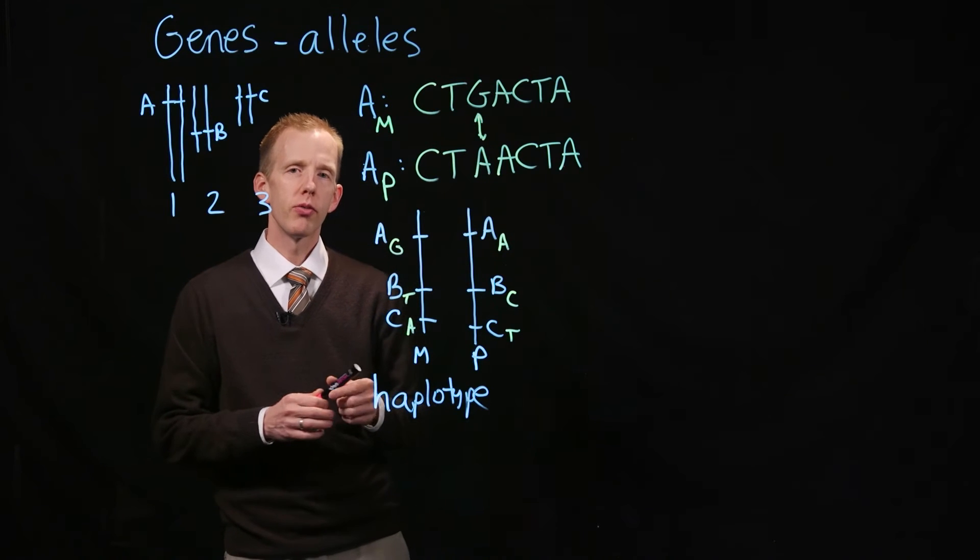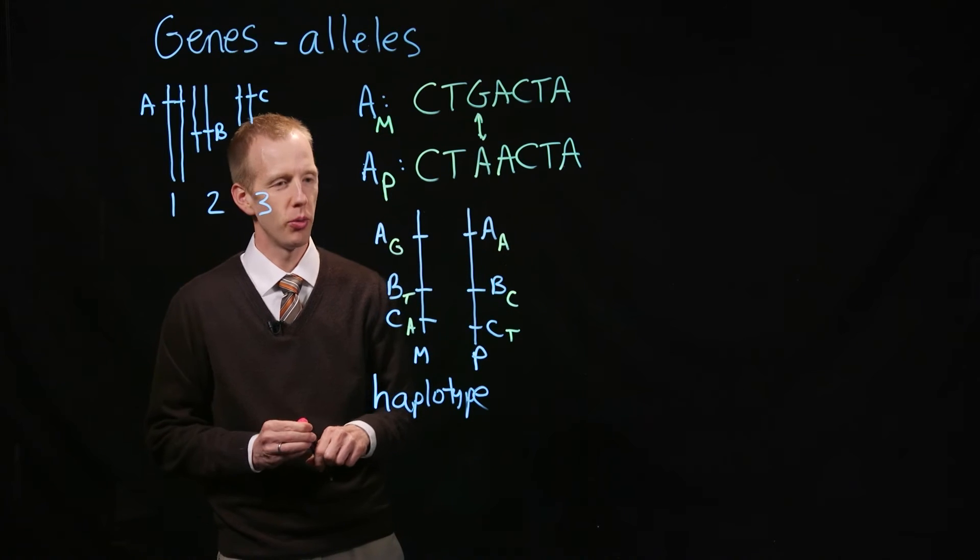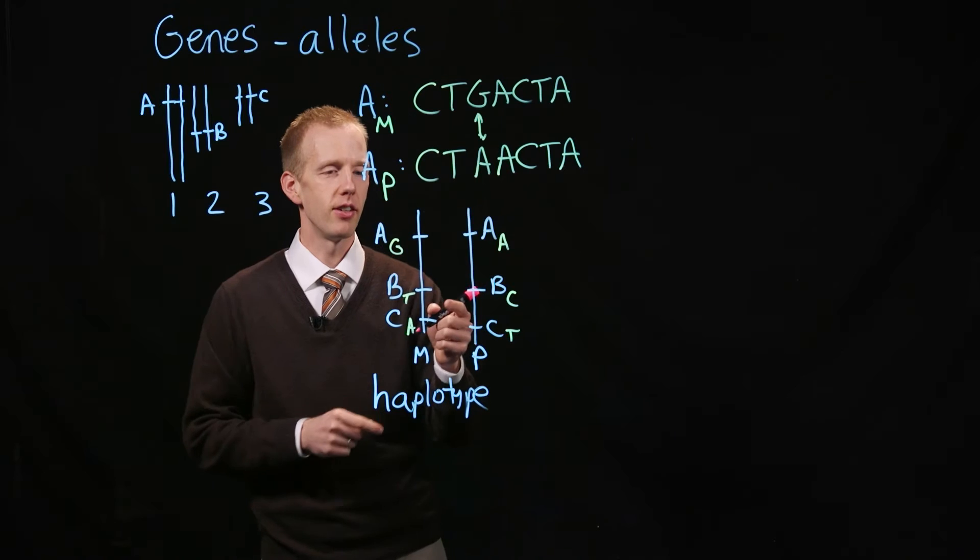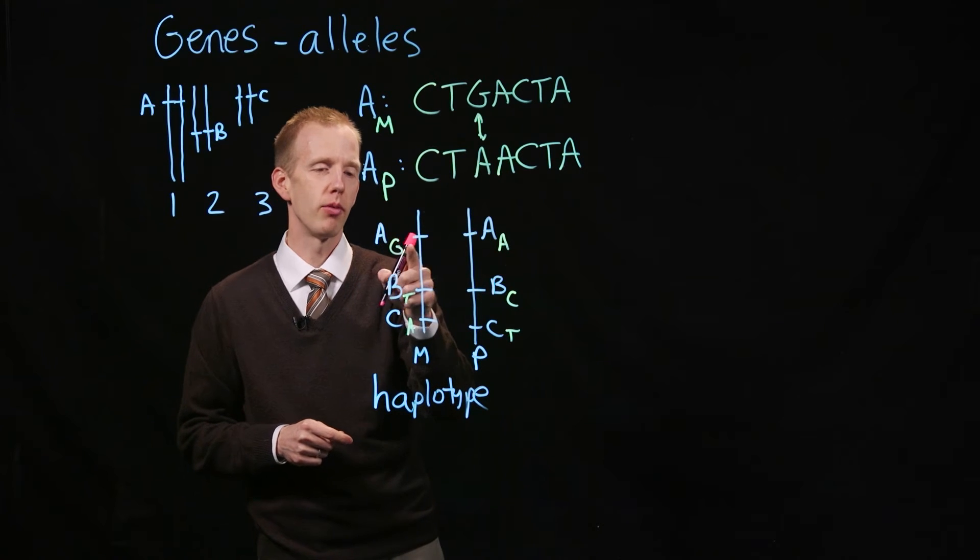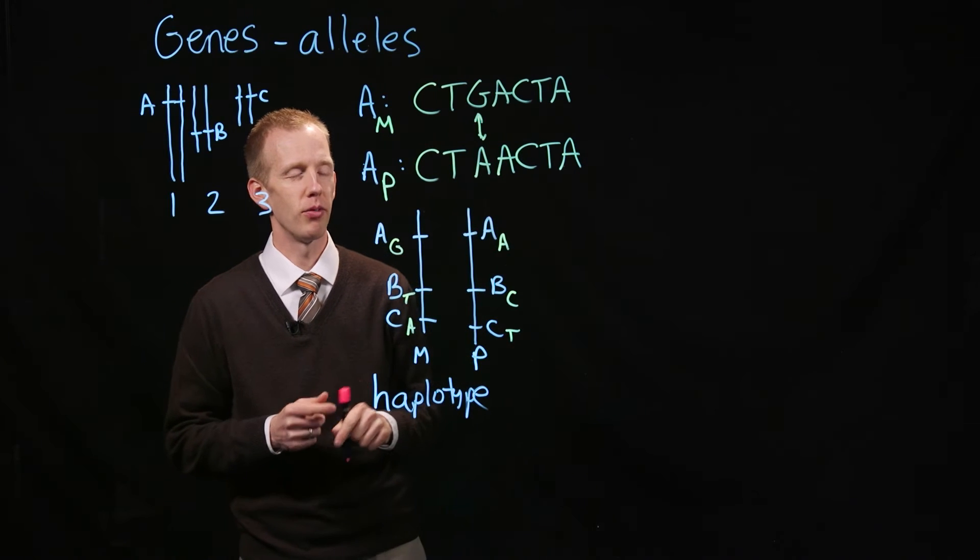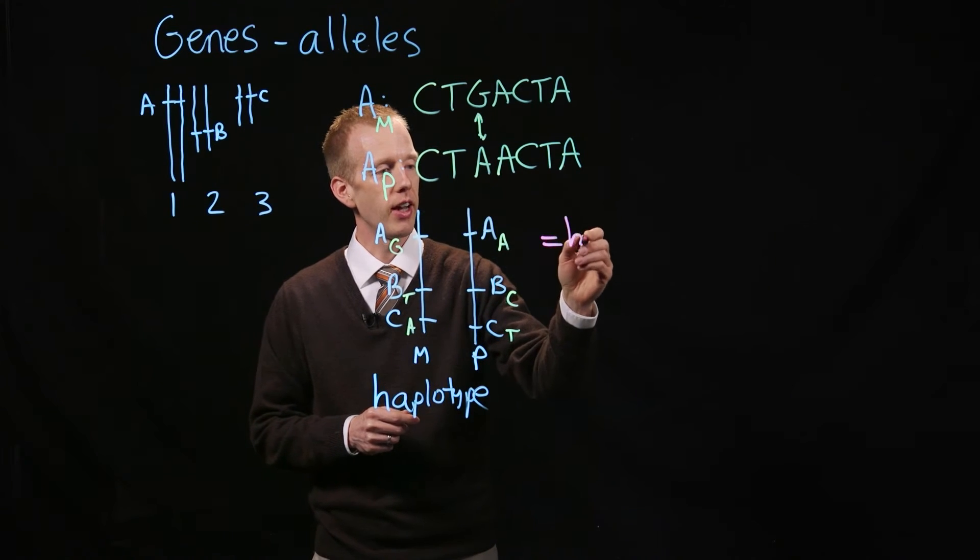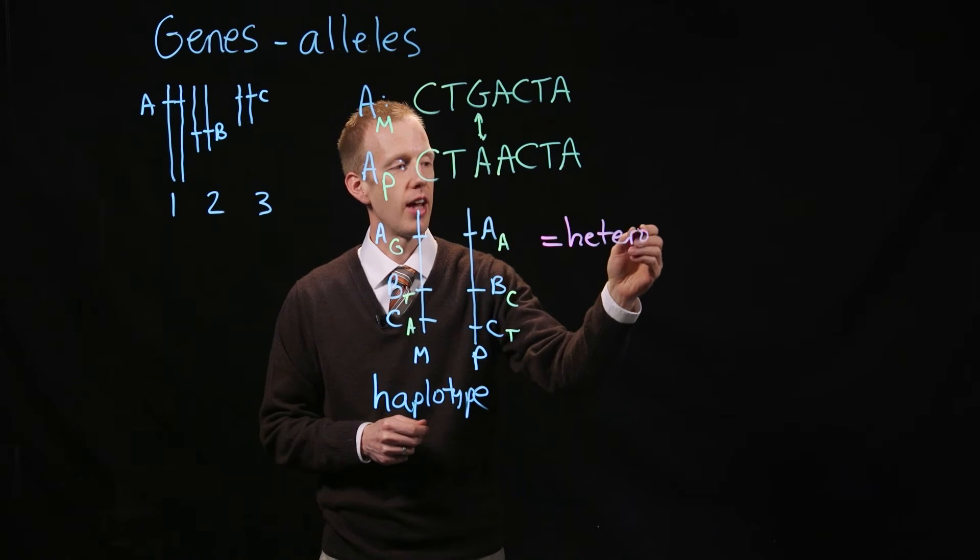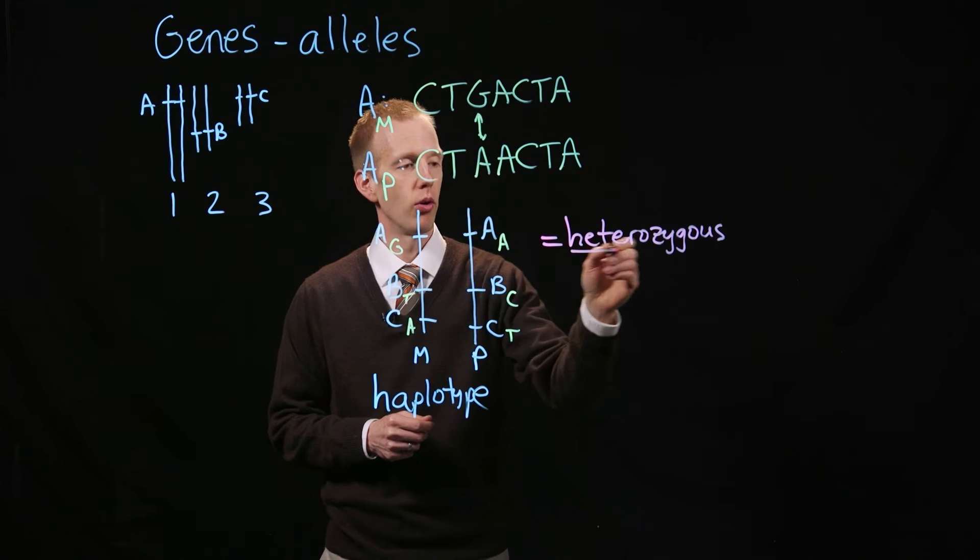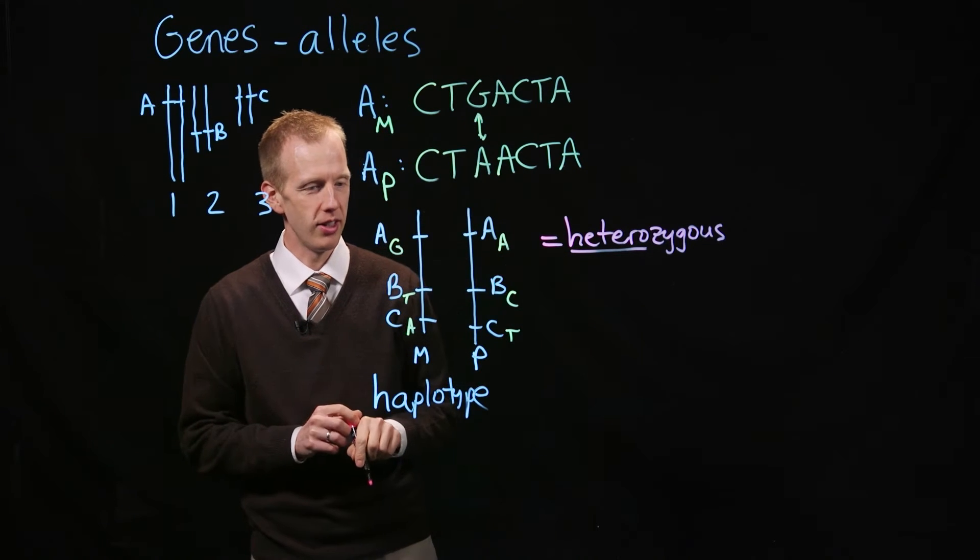There's another piece of terminology that I can add in here, and that is the difference between heterozygous and homozygous genotypes. For gene A in this individual, one copy of the chromosome has a G at the same position on the gene, and the other copy of the chromosome has an A. This is defined as a heterozygous genotype. Hetero meaning different, or other, because there are two different nucleotides here.